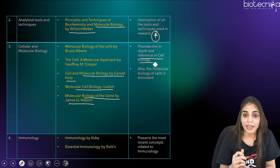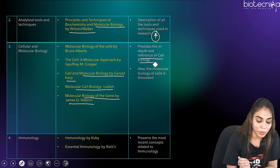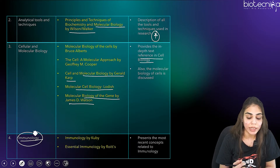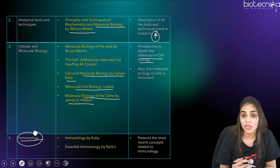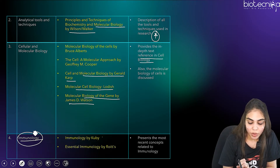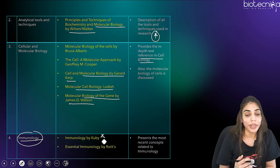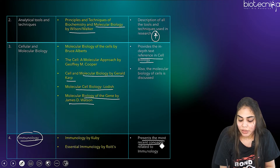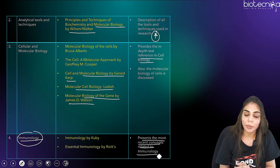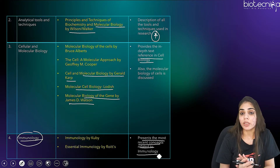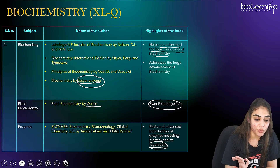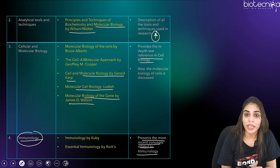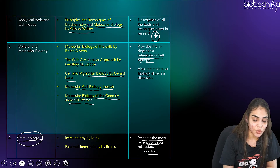Coming to the next section included in biochemistry: immunology. Here you have to study about all of the immune cells and immunity. The two best books are: Immunology by Kuby, or Kuby's Immunology by Roitt, which presents the most recent concepts related to immunology. This covers the biochemistry section — biochemistry, plant biochemistry, enzymes, cellular and molecular biology, analytical tools and techniques, and immunology.